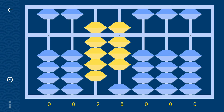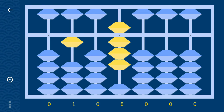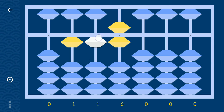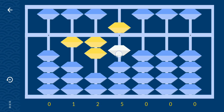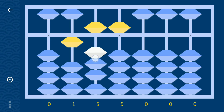Plus 18: minus 90 plus 100, and to add 8 minus 2 plus 10. Plus 19: direct plus 10, and to add 9 minus 1 plus 10. Plus 20: direct plus 50 minus 30.